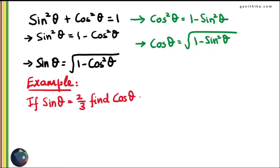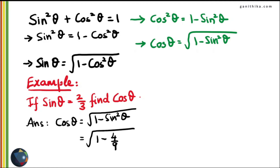For example, if sin θ = 2/3, find cos θ. Using cos θ = √(1 - sin²θ), substituting sin θ = 2/3 gives sin²θ = 4/9. Simplifying, cos θ = √(5/9) = √5 / 3. So this is the value of cos theta when sin theta equals 2/3.